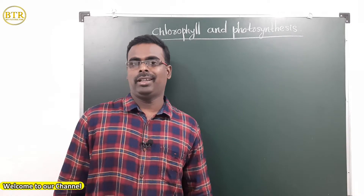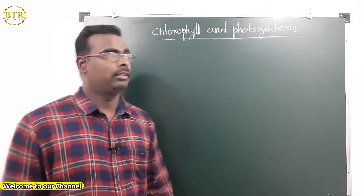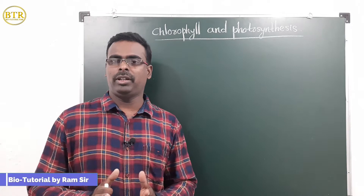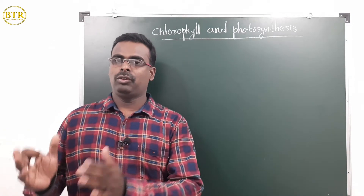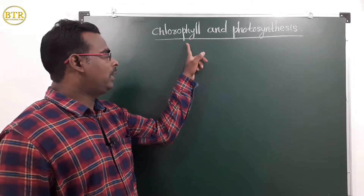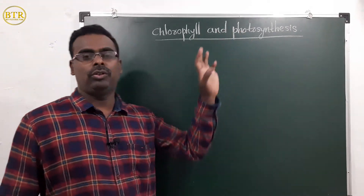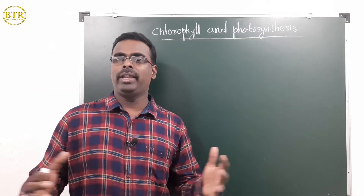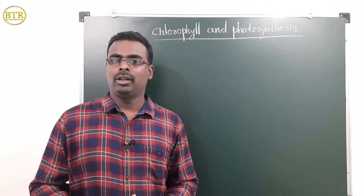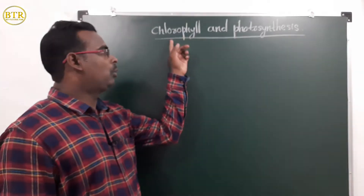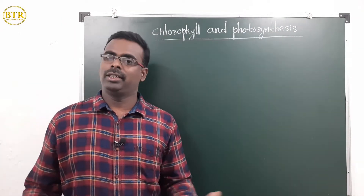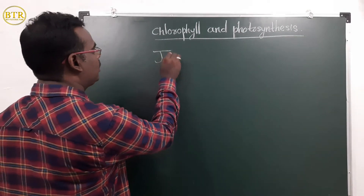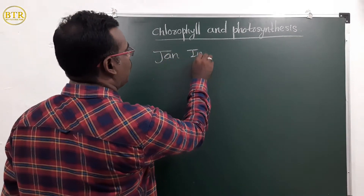Hi children, let us study about the chlorophyll and photosynthesis — what is the relation between chlorophyll and photosynthesis, and how chlorophyll is important in photosynthesis. Various scientists conducted many experiments to know this relation. Let us study the first scientist: his name is John Ingenhouse.